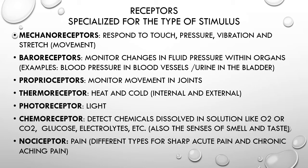We have different kinds of receptors. We just went through the mechanoreceptor, which responds to pressure, touch, vibration, and stretch. We have baroreceptors — pressure receptors typically found in blood vessels, the stomach, and the urinary bladder — measuring blood pressure and fullness. Proprioceptors are found in and around joints, skin, muscles, tendons, and ligaments, telling us exactly where our body is at any given time. These are our body-position-sense receptors, both conscious and unconscious types.